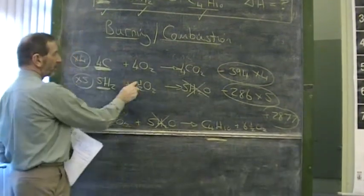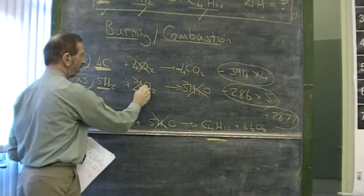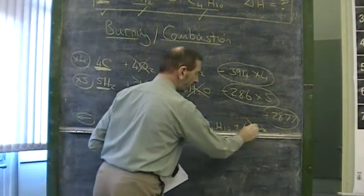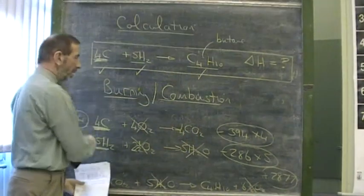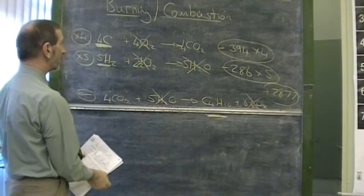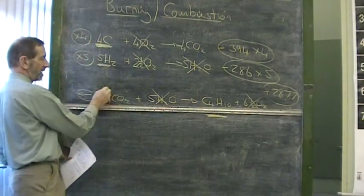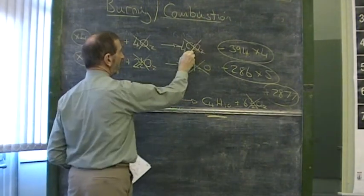Likewise, let's do that. 6 and a half oxygens here will cancel with the 6 and a half oxygens there. And that's good because we don't want oxygen in this equation. Is there anything else which will cancel? Let's see. Yes, the carbon dioxide. The 4 CO2's there will cancel with the 4 CO2's there.